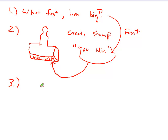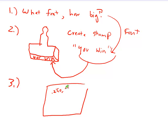Step number three: you take that stamp, you tell it where on the screen — like 250, 250 — where you want the stamp to go, and you stamp it there on the screen. Those three steps will allow you to put text onto the screen. Let's see how it actually looks when you code it.